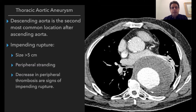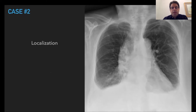When you see an aortic aneurysm, make sure there is no impending rupture sign. Size is important, as is the presence of peripheral strandings. If you have any prior imaging and the intra-aneurysmal thrombosis is significantly decreased, this is also another impending rupture sign.